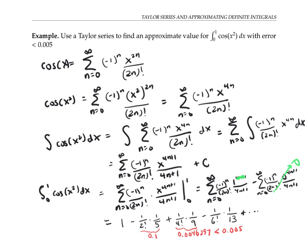So in fact, I can get away with the estimate within that error bound of 0.005 just by taking those first two terms. And they add up to 1 minus 0.1, which is 0.9.